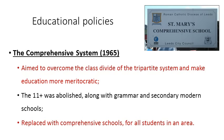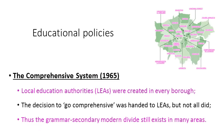The next big milestone was in 1965 with the implementation of the comprehensive system. A new Labour government had taken power and was unhappy with the tripartite system and the inherent elitism it seemed to breed. They aimed to overcome the class divide and make education more meritocratic. As a result, the eleven-plus was abolished, along with grammar and secondary modern schools — no new grammar schools could be created and the vast majority of schools became comprehensive schools for all students in the area. Local education authorities, or LEAs, were created in every borough to oversee all schools. However, the decision to go comprehensive was handed to LEAs, and not all decided to do so, meaning many retained the grammar-secondary modern divide, which in some areas still exists today.